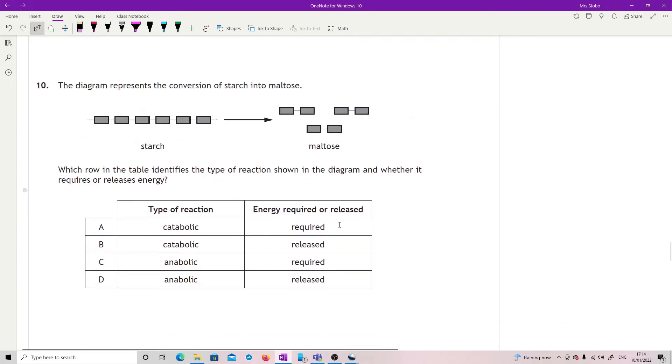Question ten: diagram represents the conversion of starch into maltose. Which row on the table identifies the type of reaction shown and whether it requires or releases energy? So we are taking a large molecule and breaking it into smaller molecules. That means that we are looking at something which is catabolic. And the definition of that is that it also releases energy, because the bond energy in here and the bond energy in here must go somewhere, so it gets released.